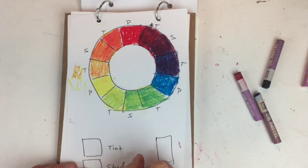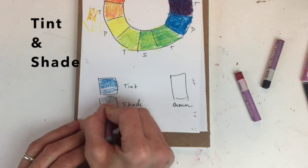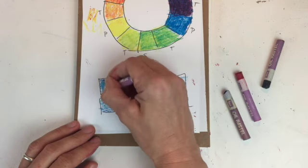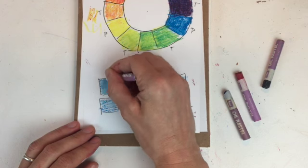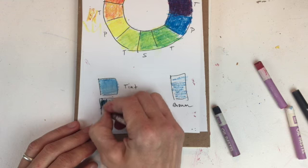Then I want to create tints and shades and practice brown. A tint is created with white, but first I'm going to choose a color. Of course, you can make a tint and a shade for every color, but just practice it with one. I've laid down my blue and added white. For a shade, I need to add black.